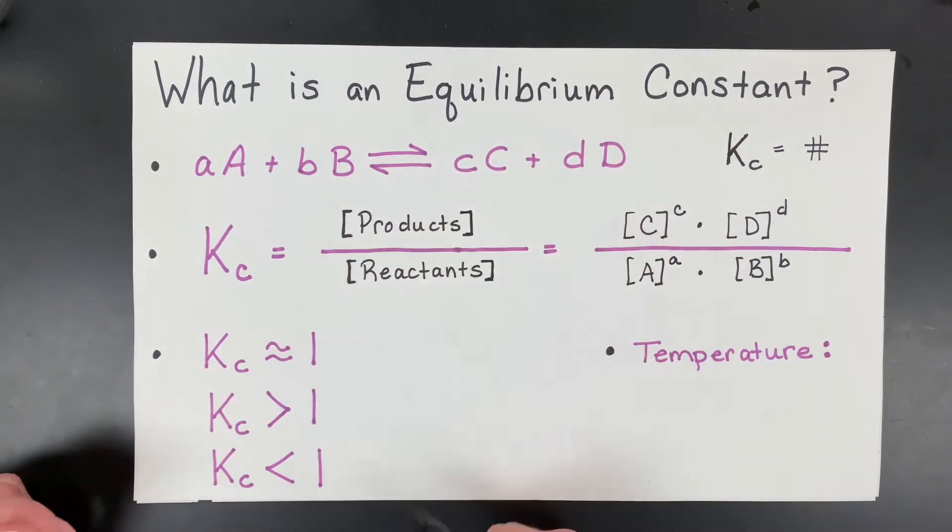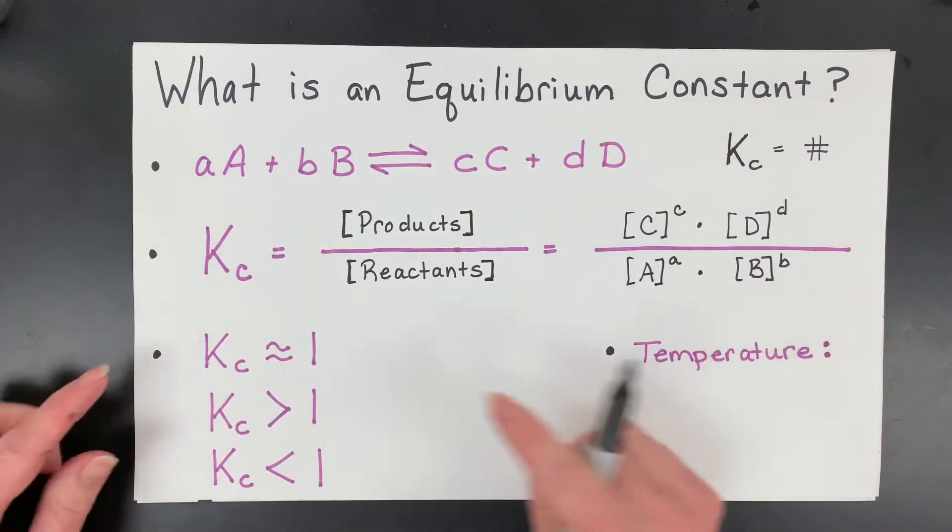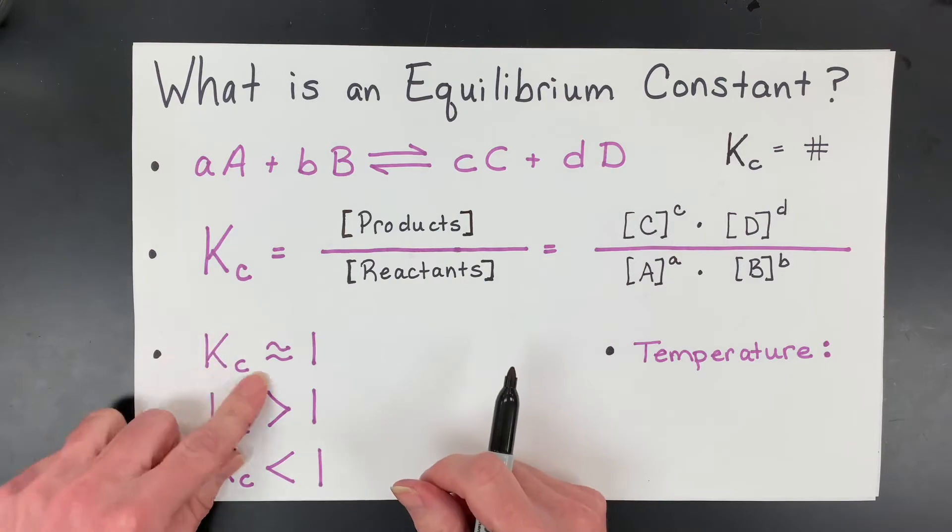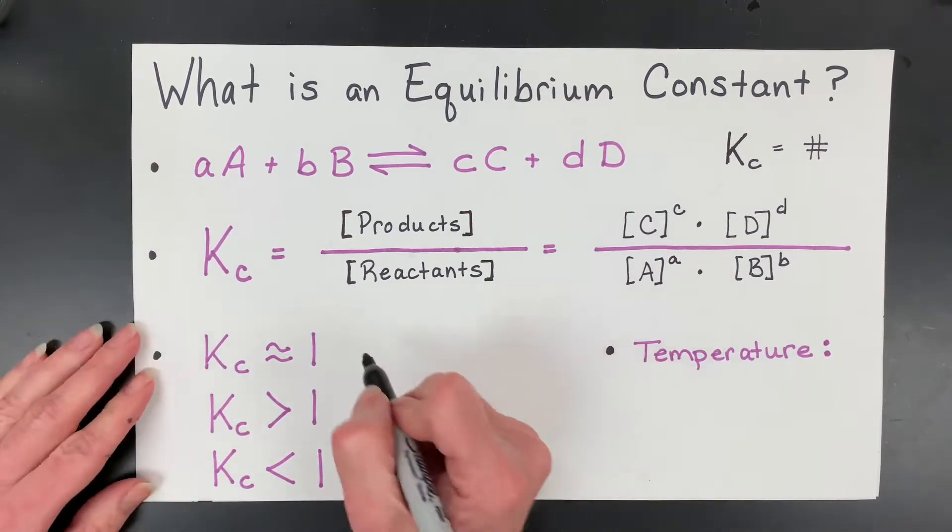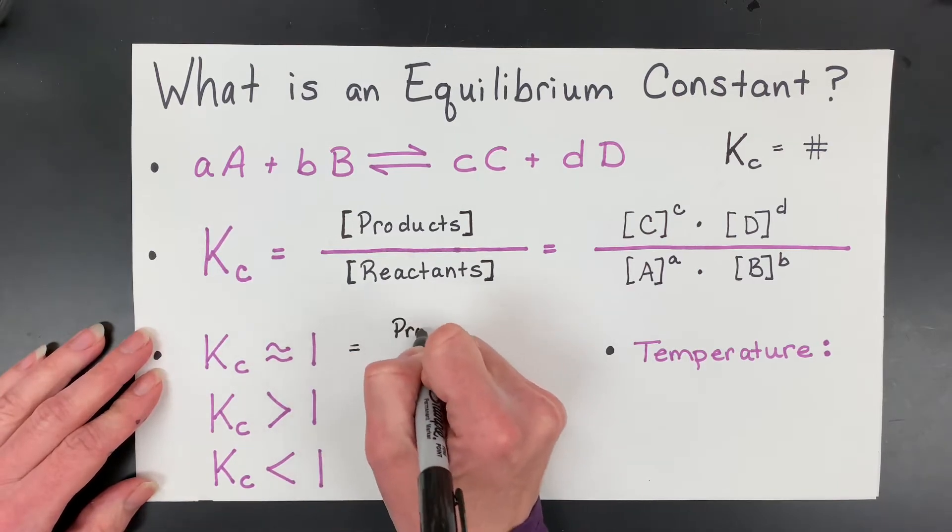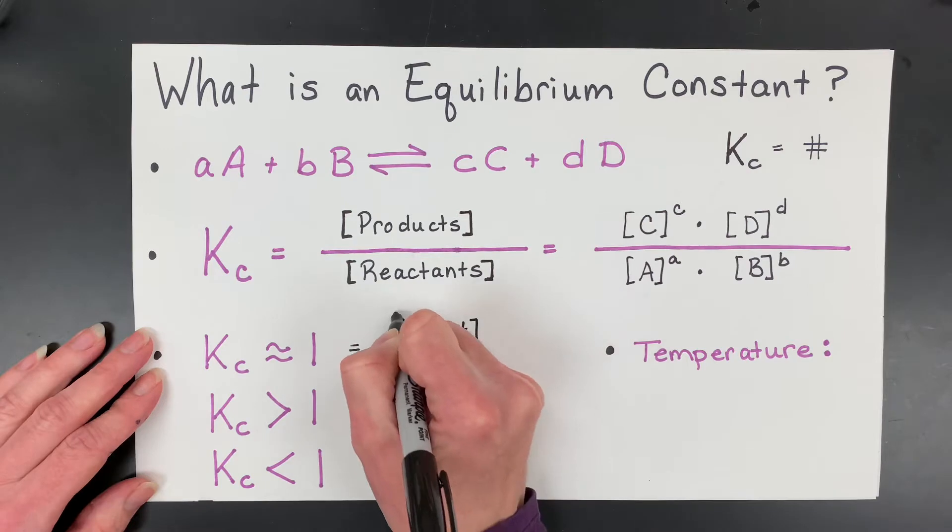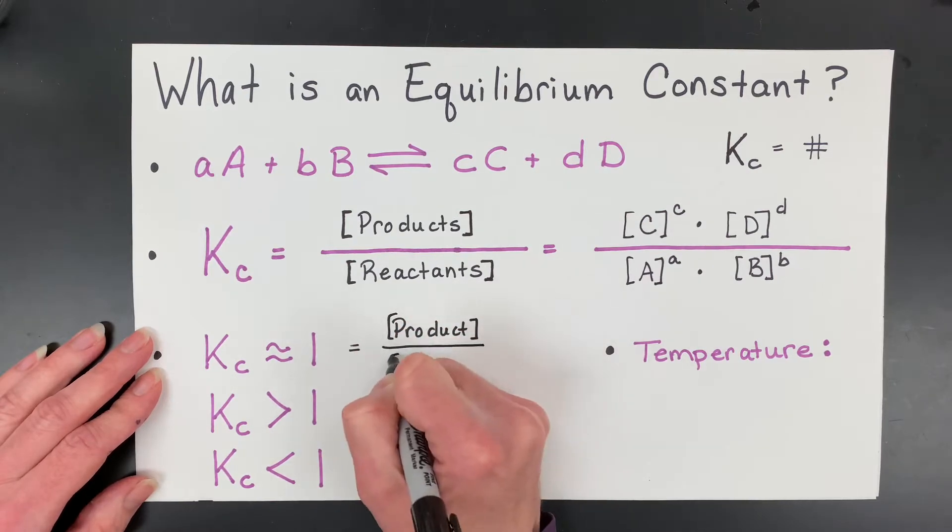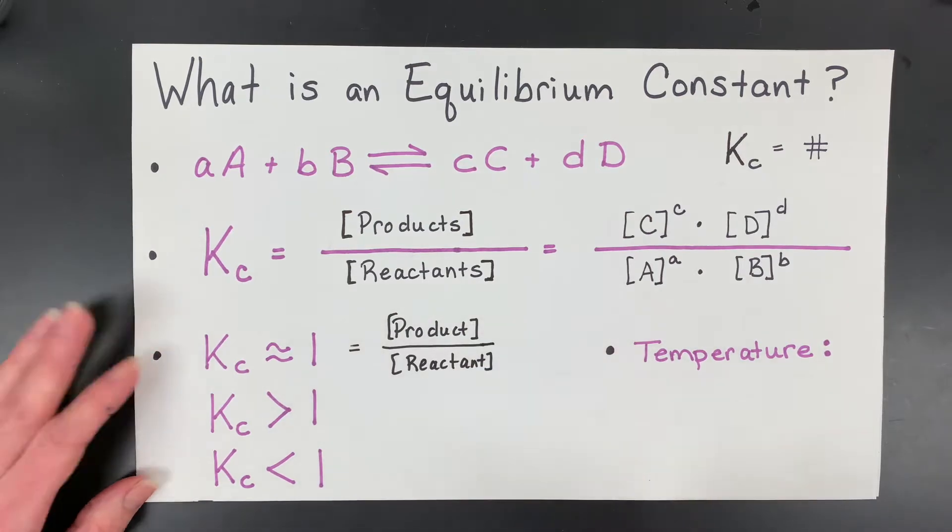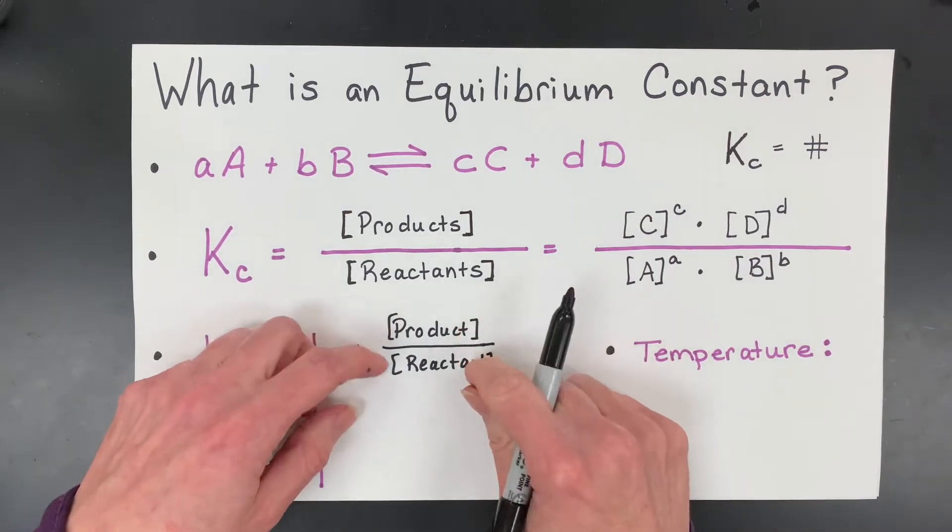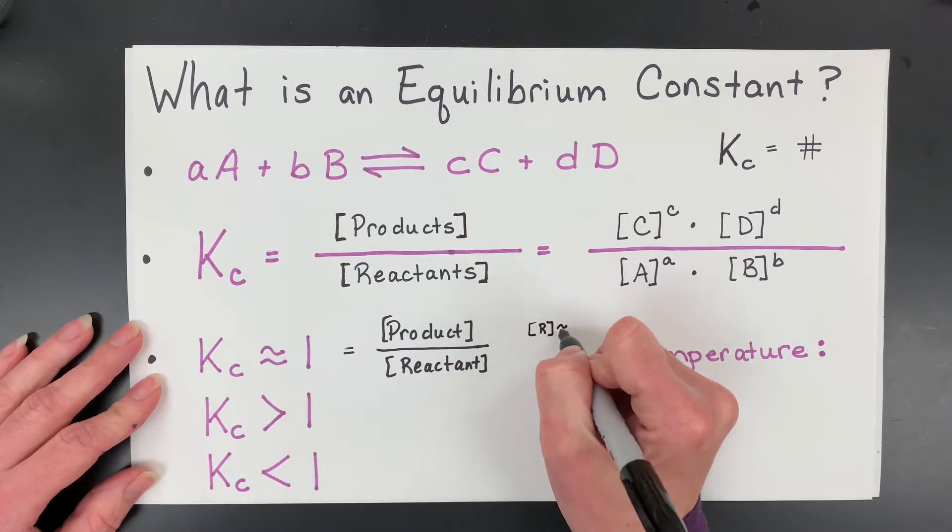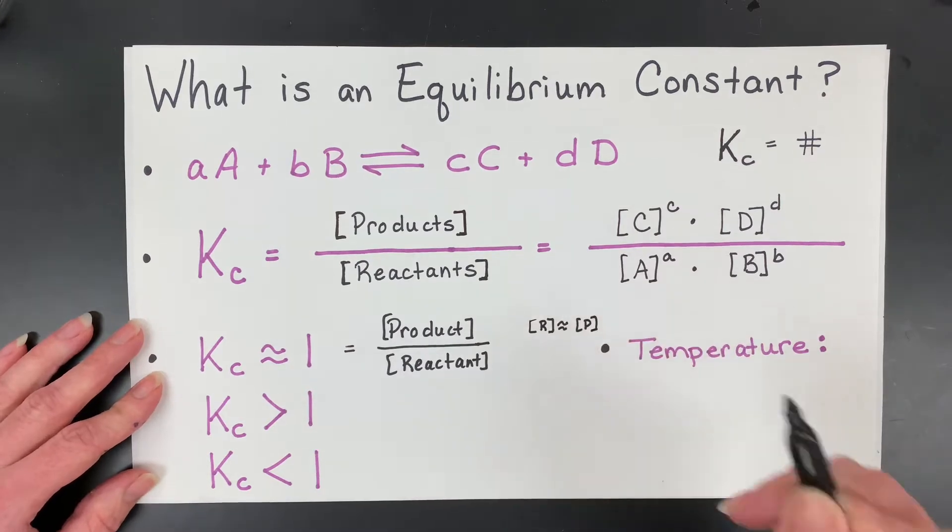Now, if we have these reversible reactions and they reach equilibrium, there are three kind of set positions that these can have. They could land with an equilibrium constant that's fairly equal to one. And what that means is your product concentration is fairly equal to your reactant concentration. So the reactant is approximately the same as product, meaning the reactant and product concentration.